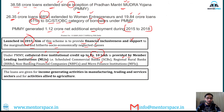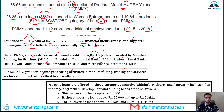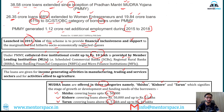Under the scheme, loans are given for income-generating activities in manufacturing, trading, and services sectors. Mudra loans are offered in three categories: Shishu — loans up to Rs. 50,000; Kishore — loans above Rs. 50,000 and up to Rs. 5 lakh; and Tarun — loans above Rs. 5 lakh and up to Rs. 10 lakh. Remember these three categories.